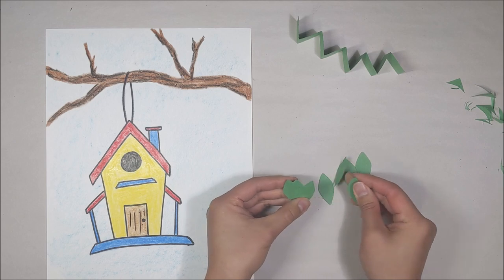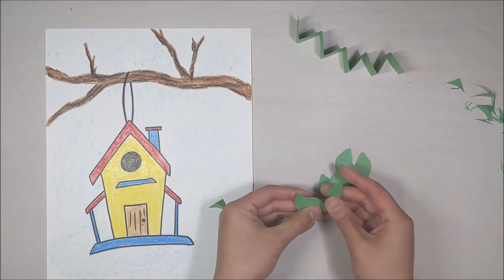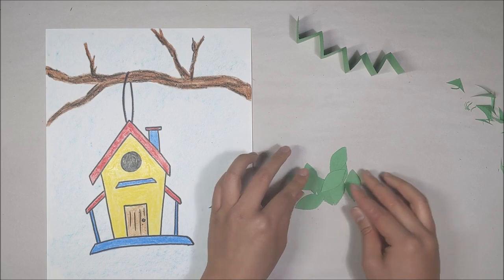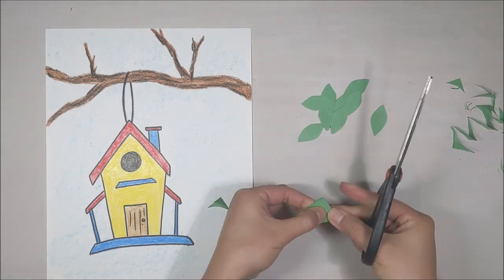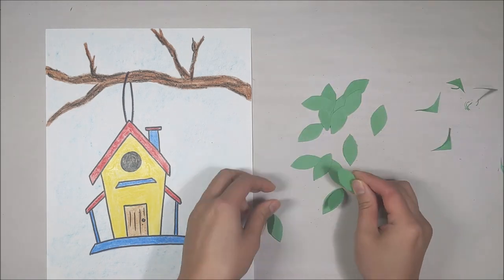Instead of cutting individual leaves out one at a time, the zigzag technique really saves you time. With the other green zigzag strip, I'll do the same thing to create more leaves.